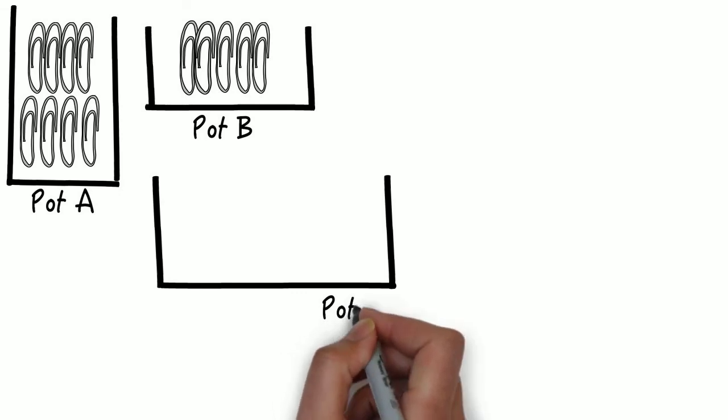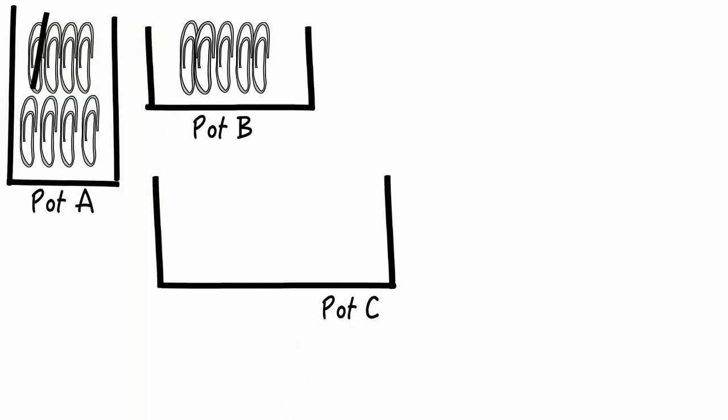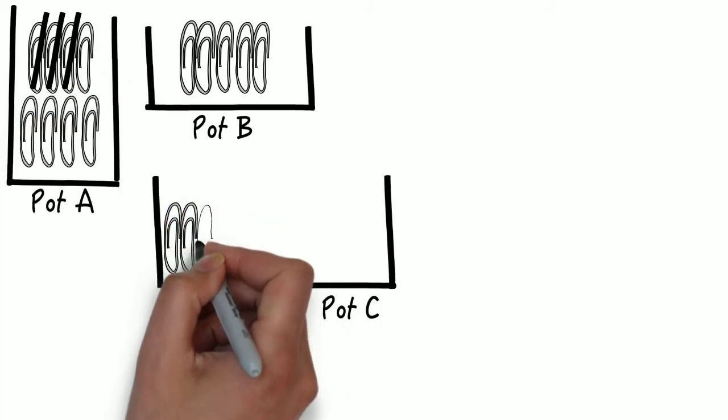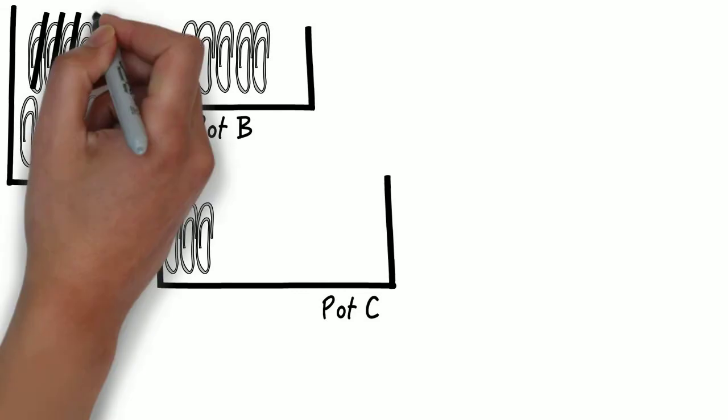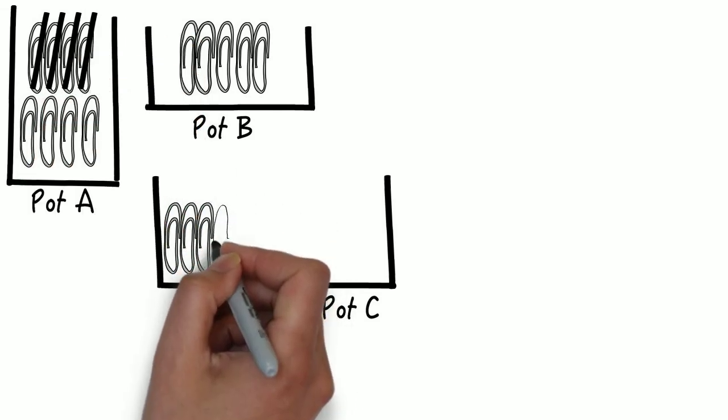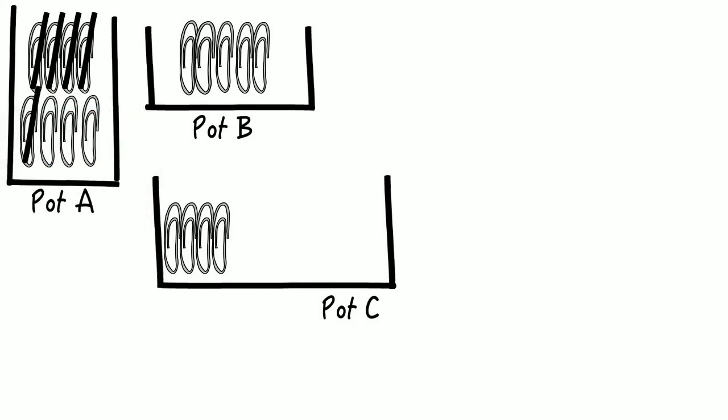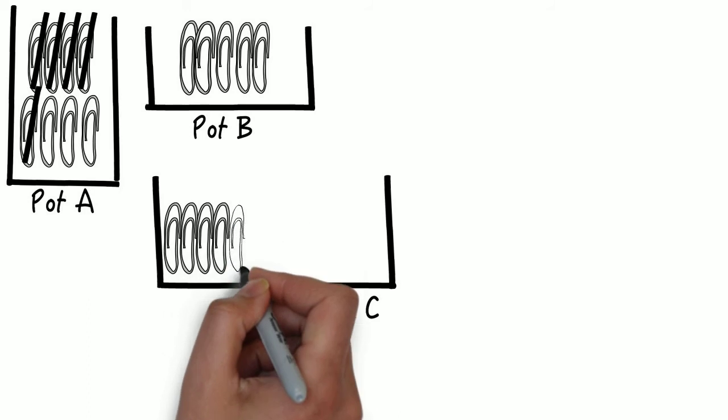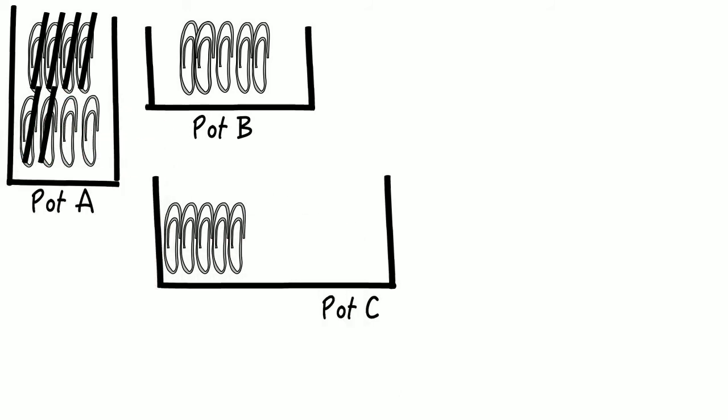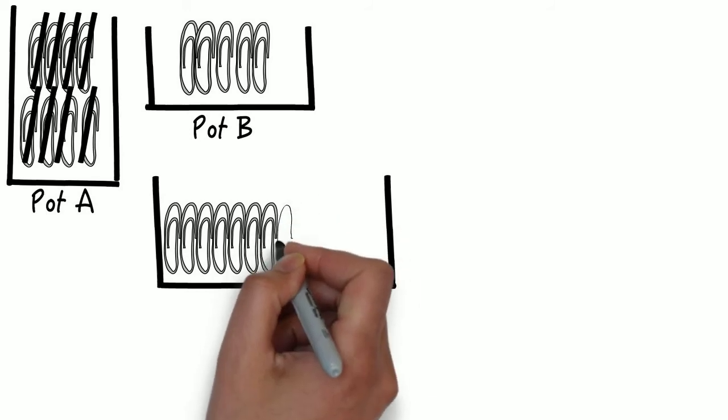So, from pot A. One, two, three, four, five, six, seven, eight.